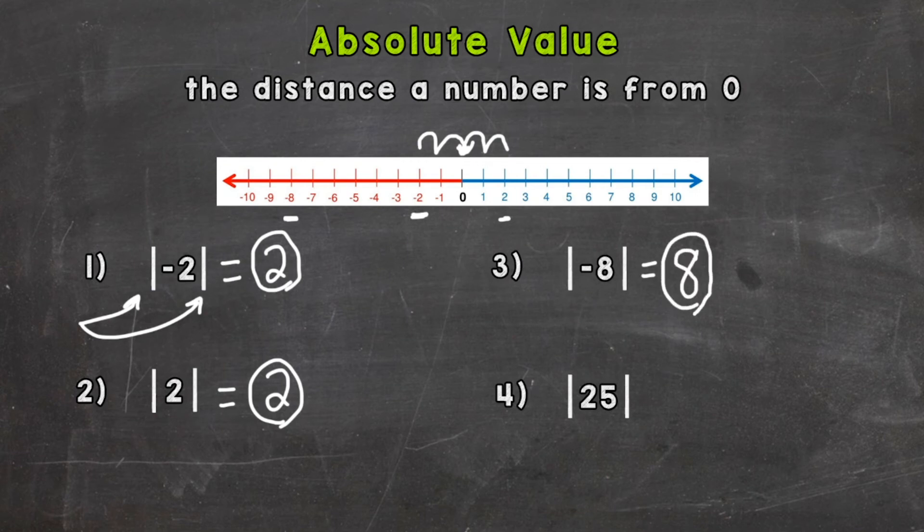And lastly, number four, a positive 25. What's the absolute value of a positive 25? Well, how far is it away from zero? And it is 25 away from zero.